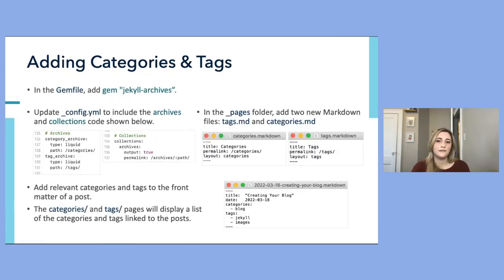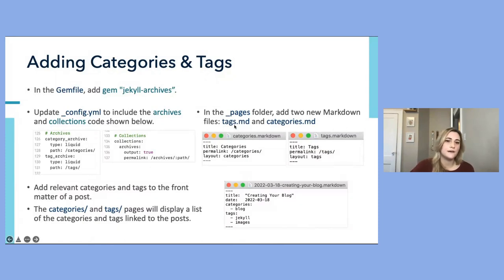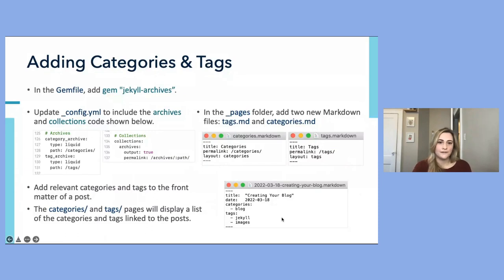Enable categories and tags by adding the jekyll-archives gem to the Gemfile, then update the config file to include the archives and collections code. For archives, add a category archives section and a tag archive section. Within collections, add archives. Then in the pages folder, add two new Markdown files — a tags page and a categories page — setting the appropriate title, permalink, and layout for each. Now by adding categories and tags to the front matter of a post, those will appear on the categories and tags pages.